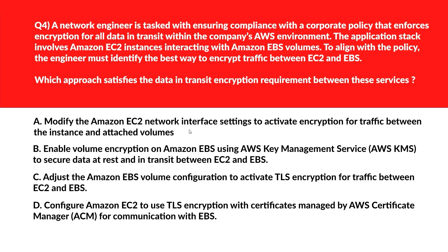Let's look at this question — it's all about data-in-transit encryption. Option A says: modify the Amazon EC2 network interface settings to activate encryption for traffic between the instance and the attached volume. EC2 network interface settings do not support encryption options that secure data in transit to EBS volumes. That's incorrect.